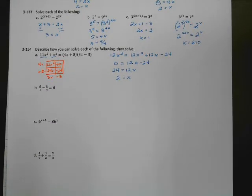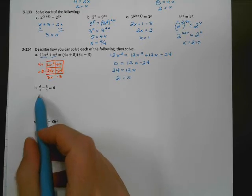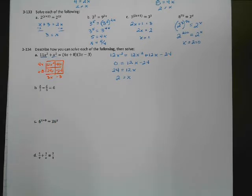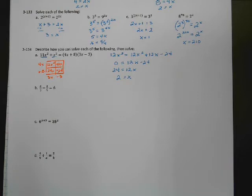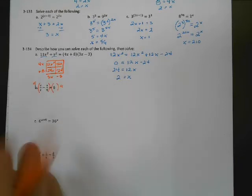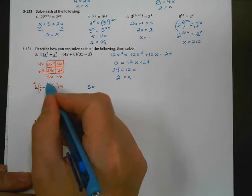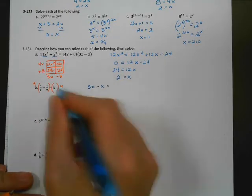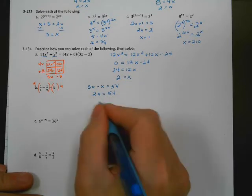Next one: I want to undo these fractions by clearing them. I've got denominators of 3 and 9, so the smallest number both go into is 9. I'll multiply both sides by 9. So 9 times x over 3 gives 3x, and 9 times x over 9 gives just x. Over here I've got 54. So 2x equals 54, divide by 2, and x equals 27.